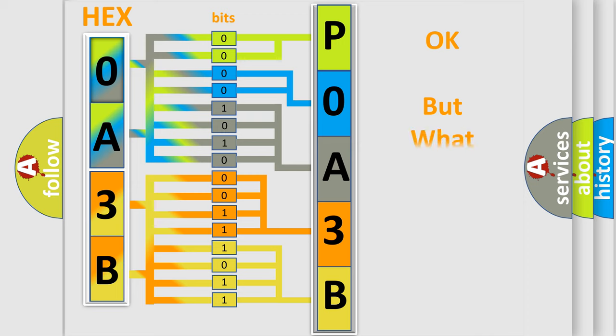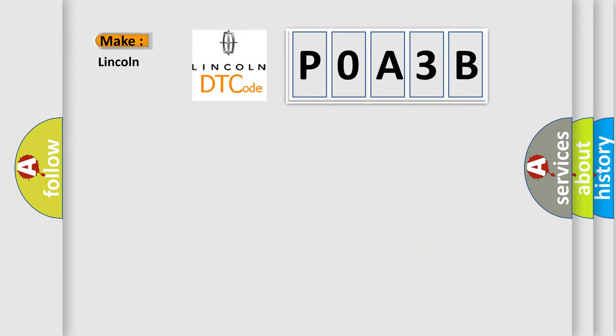The number itself does not make sense to us if we cannot assign information about what it actually expresses. So, what does the Diagnostic Trouble Code P0A3B interpret specifically for Lincoln car manufacturers?